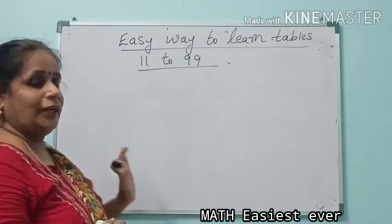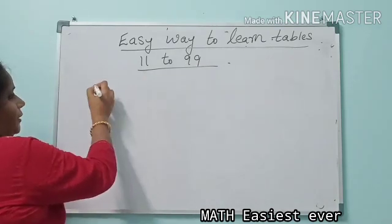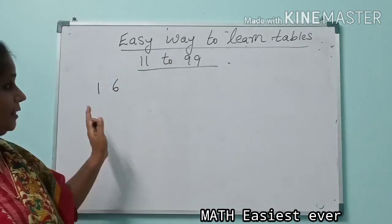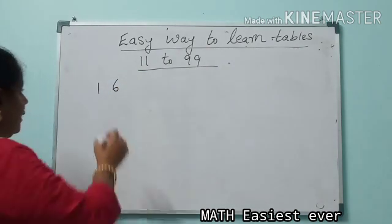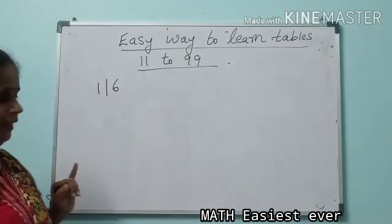For this, you should know the tables from 2 to 9. Now let's take a two-digit number, 16. How do you learn a two-digit number 16 in an easy way? Just divide it like this: 1 and 6.